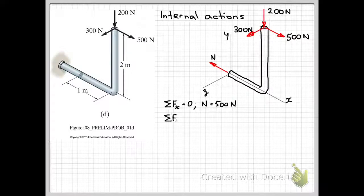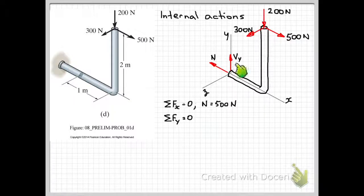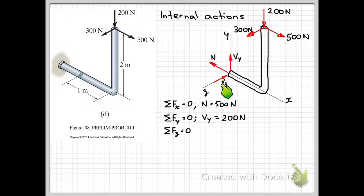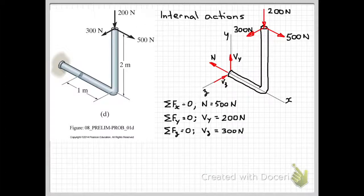Next we'll look at the sum of the forces in the y direction. We have a 200 newton force acting in the y direction, so internally we'll need an internal force to resist that — that's going to be a shear force, so we'll call that V subscript y. Applying our equilibrium equation, we get Vy equals 200 newtons. Next we'll do the sum of forces in the z direction. We have a 300 newton force, so the internal force to resist that is also a shear force, V subscript z, and applying the equilibrium equation, Vz equals 300 newtons.